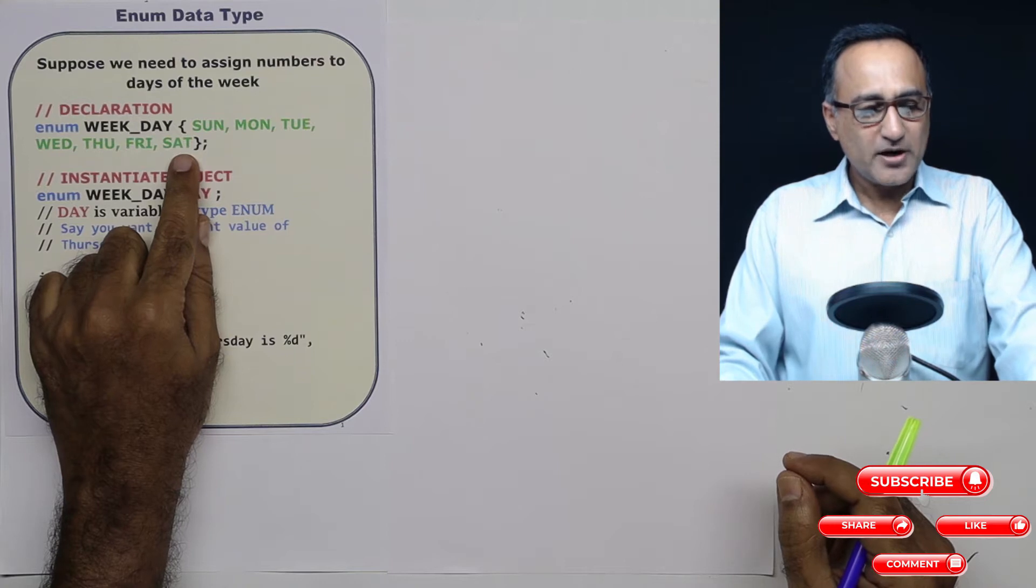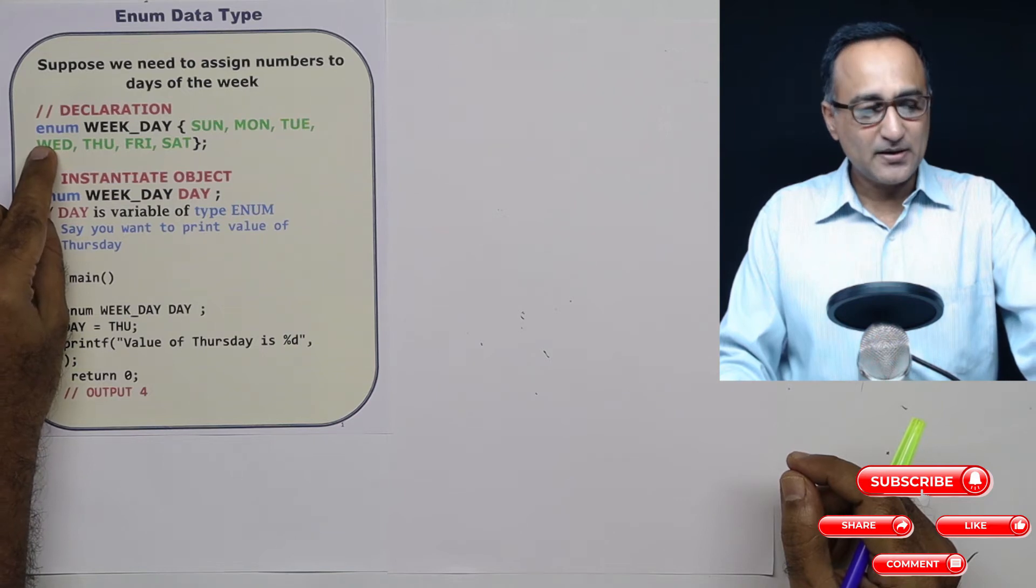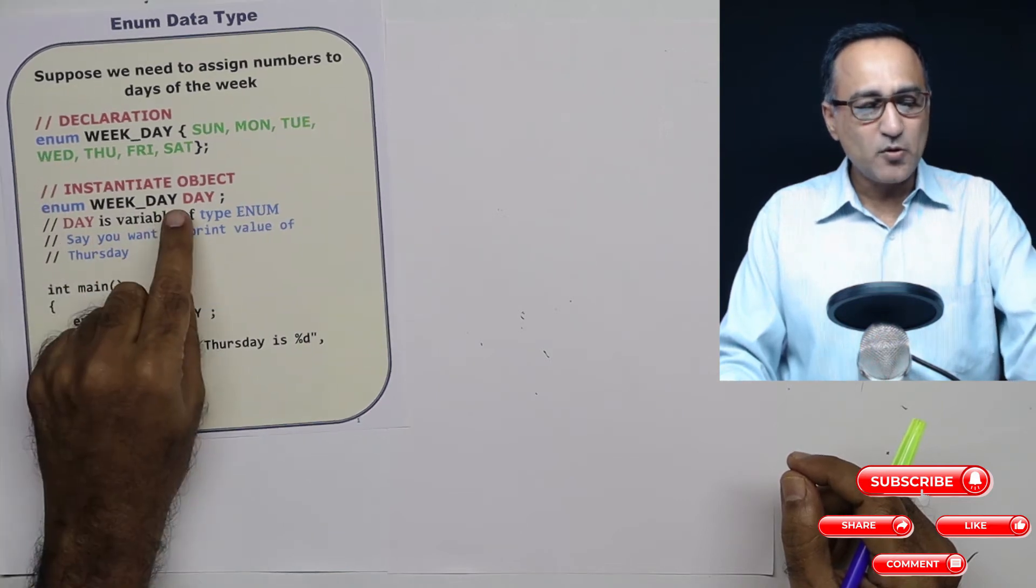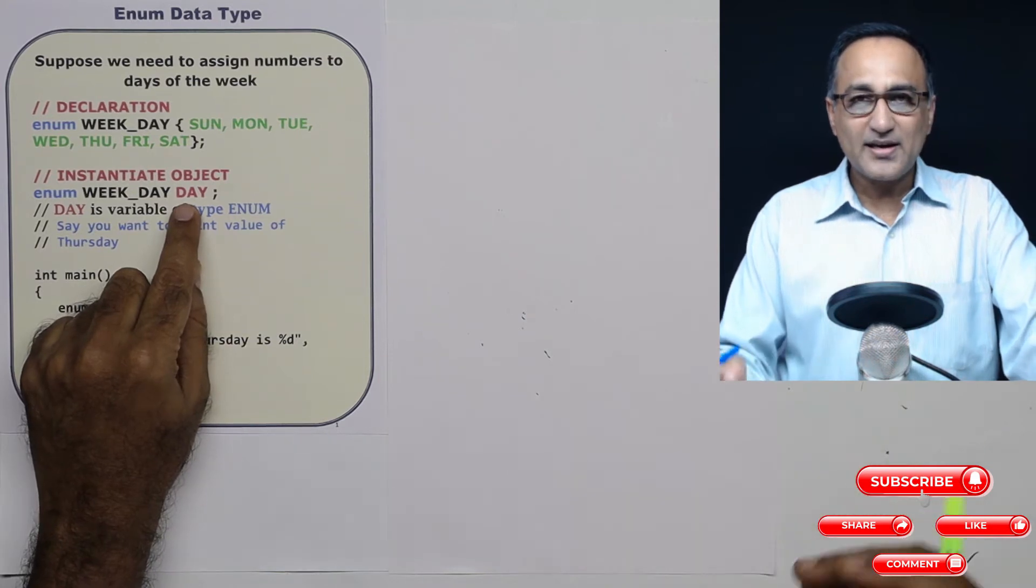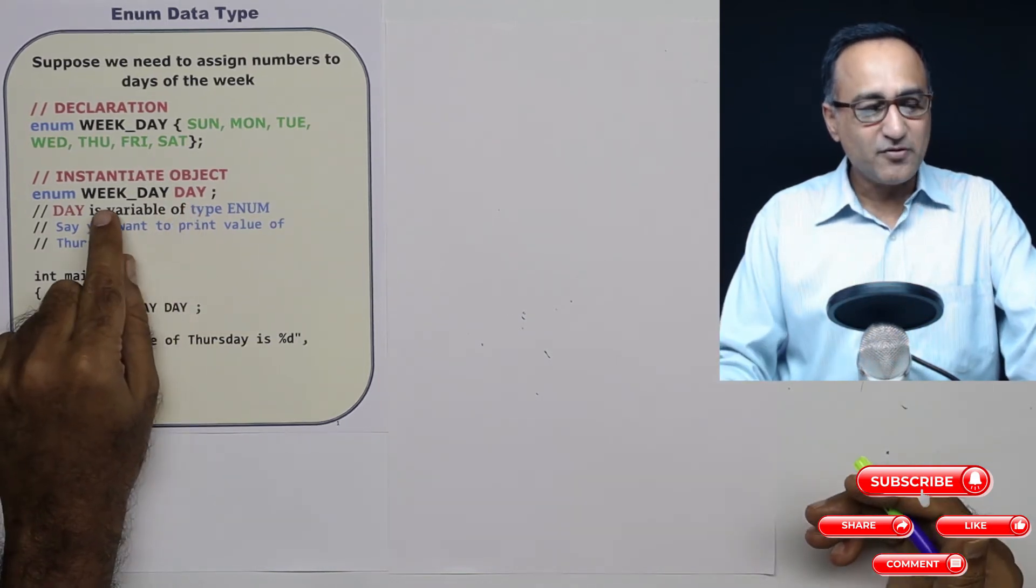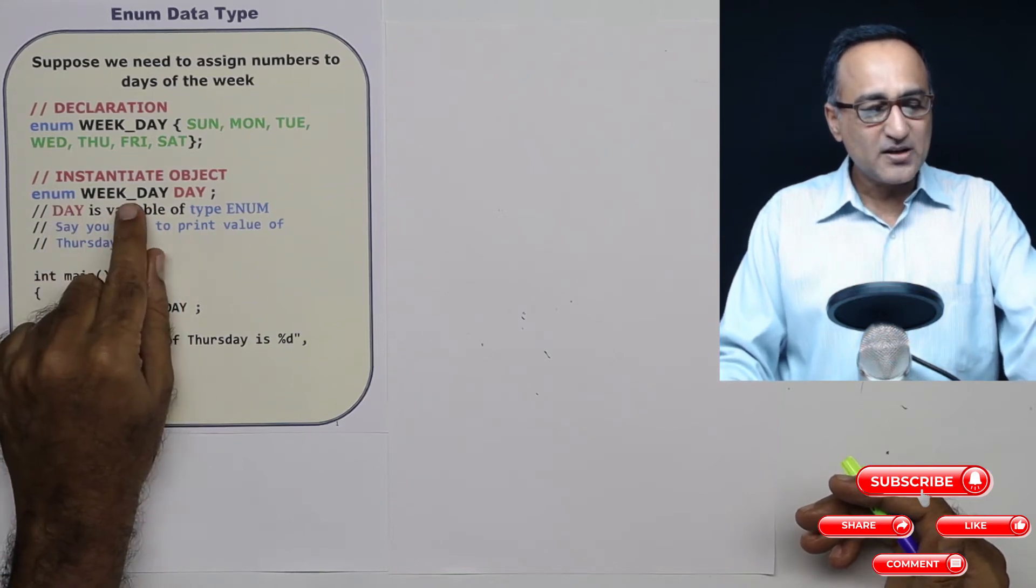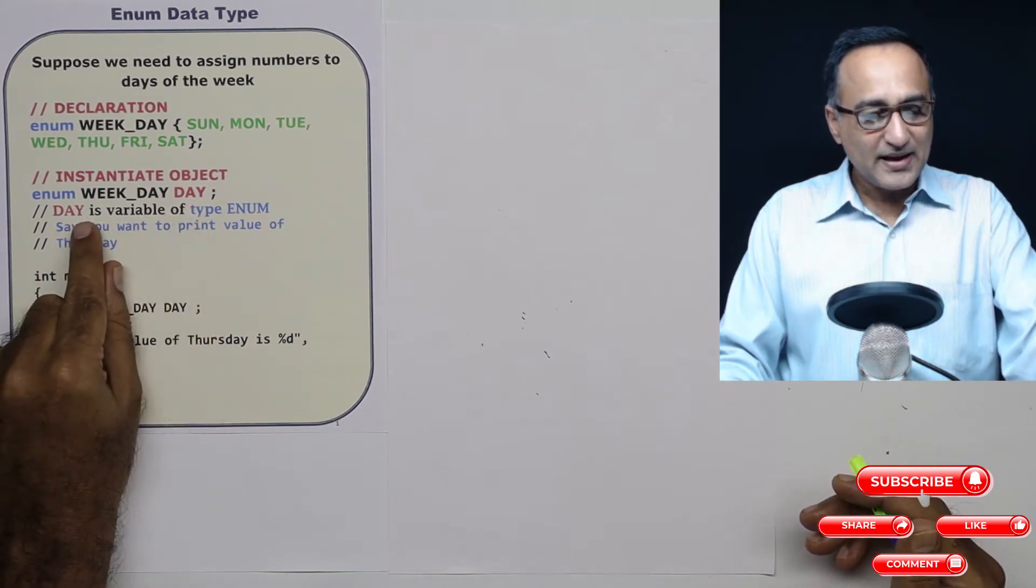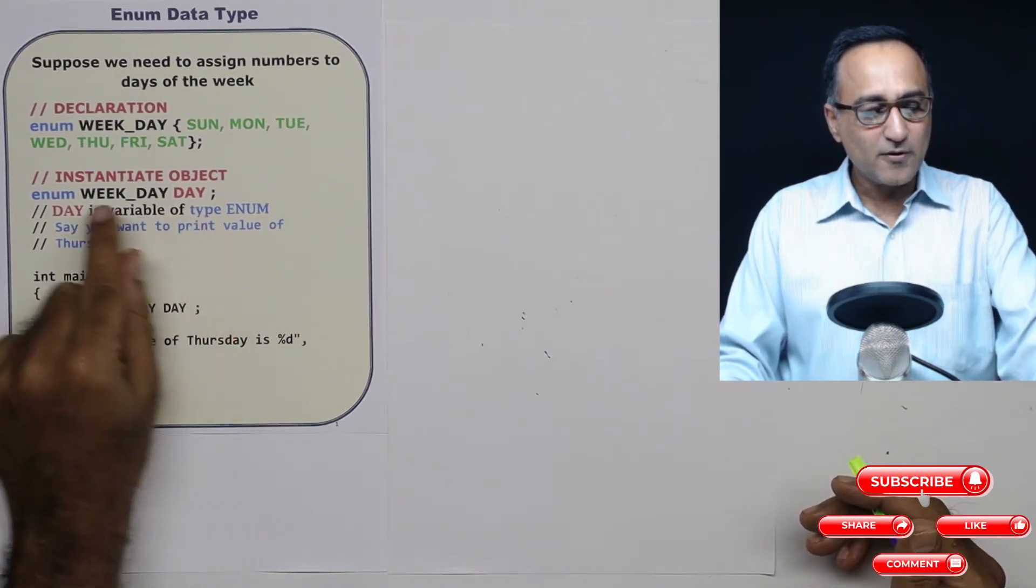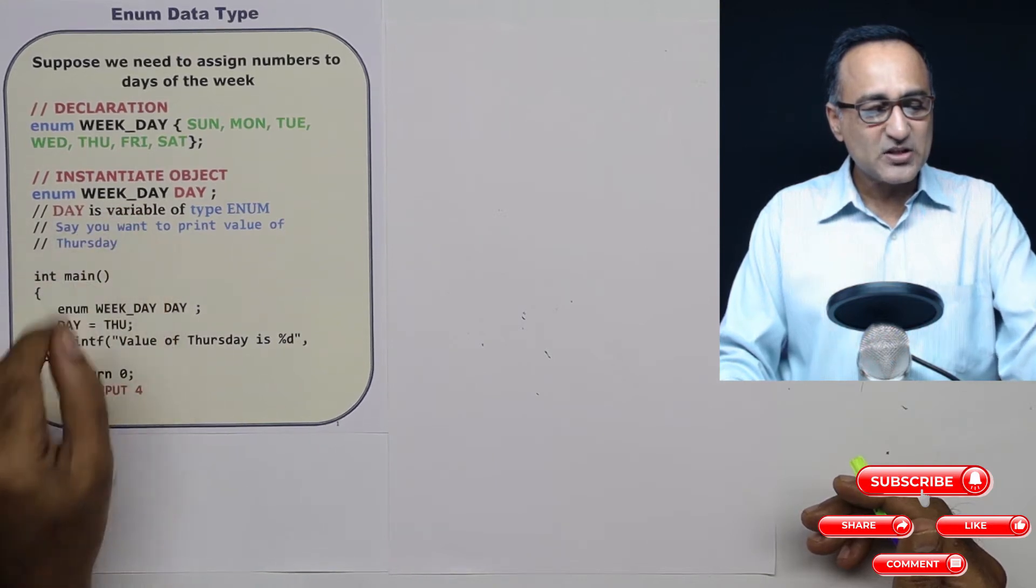So now I have created a model of enum type of data. Then what I'm going to do is now I'm going to create an actual variable or give life to this weekday variable. So what I do is I say enum week_day, I say day. Now day happens to be a variable of the enum type, which has the same properties as this weekday.